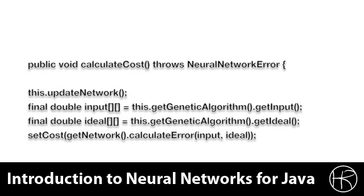Here to calculate it we use the input and ideal and we calculate the error for the neural network just as we did with back propagation. This error allows us to sort.